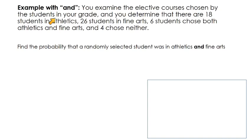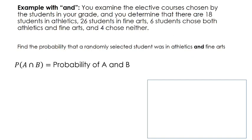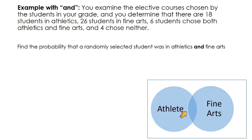Let's look at an AND example. It says you examined the elective courses chosen by students in your grade and determined that there are 18 students in athletics, 26 in fine arts, 6 in both, and 4 chose neither. You want to find the probability that a randomly selected student was in athletics and in fine arts. We're doing the probability of A and B. I like to get a Venn diagram going — you probably don't need it to answer this problem, but it helps you visualize things.